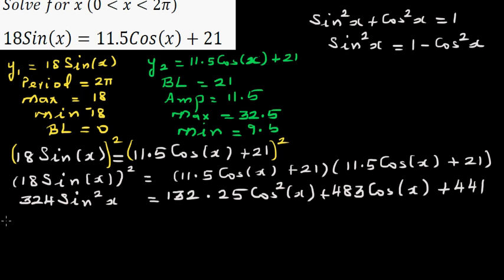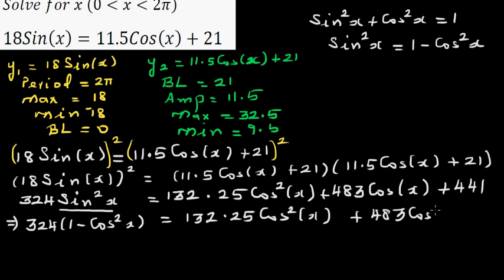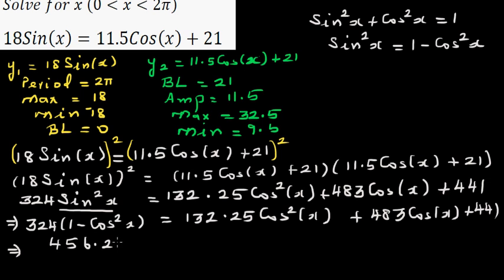Now I'm going to substitute sin²x = 1 − cos²x. So the left side becomes 324(1 − cos²x) = 132.25 cos²x + 483 cos x + 441. Expanding and simplifying — moving all terms to one side and collecting like terms — you'll end up with 456.25 cos²x + 483 cos x + 117 = 0.